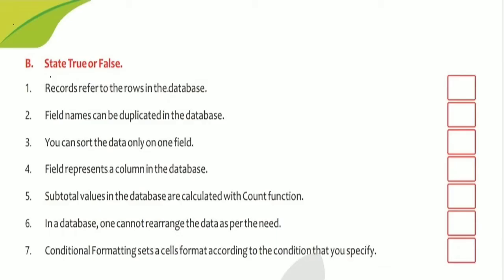Section B is State True and False. Read the statement and write T if true, F if false. First: record refers to the row in a database — that is True, because records are called rows and columns are called fields. Second: field name can be duplicated in the database — that is False, no duplication is needed in a field name.